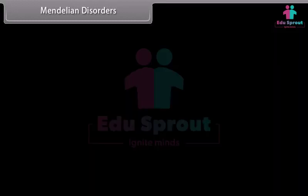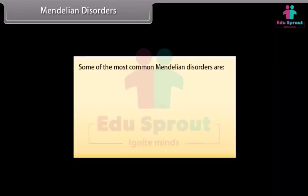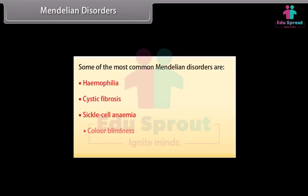Some of the most common Mendelian disorders are: haemophilia, cystic fibrosis, sickle cell anemia, color blindness, and phenylketonuria.